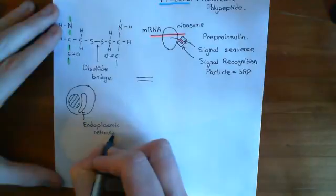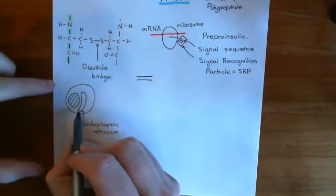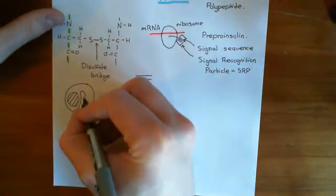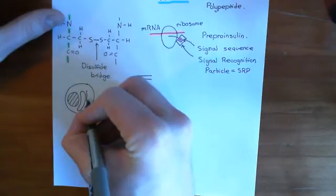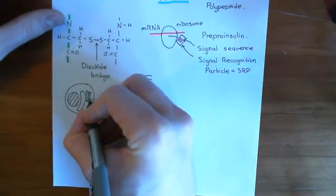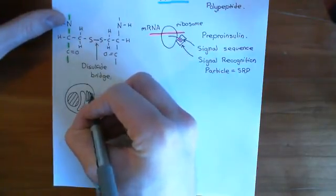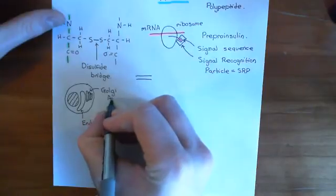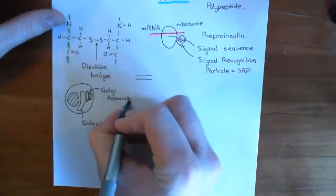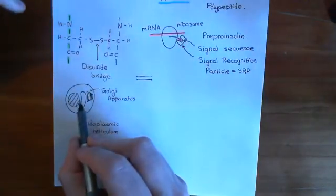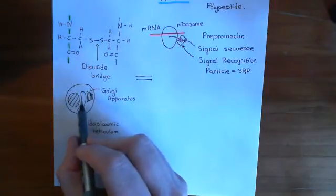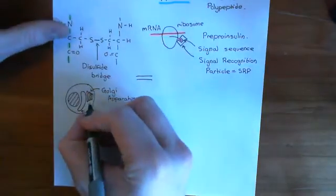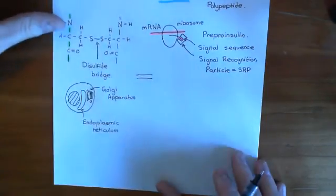Often, proteins will be targeted into the endoplasmic reticulum lumen — the space inside the ER membrane — if they're going to be secreted from the cell. What generally happens is they move from the ER into another organelle: the Golgi apparatus, which is a bunch of flattened, stacked, membrane-bound structures known as cisternae. Proteins going to be secreted first go into the ER lumen, are folded and modified there, sent to the Golgi, and then the Golgi packages them into a secretory vesicle to be secreted from the plasma membrane.